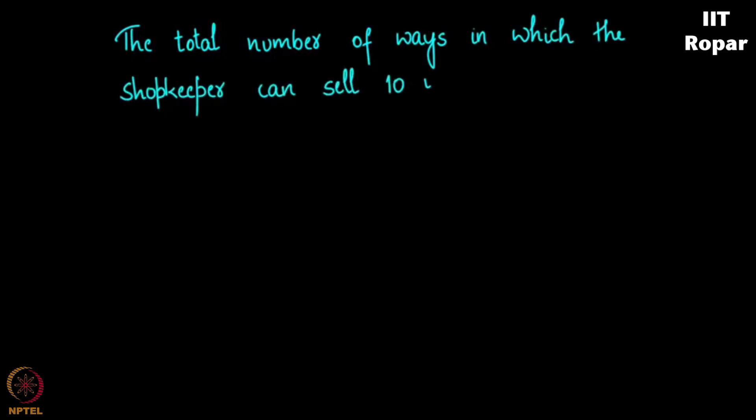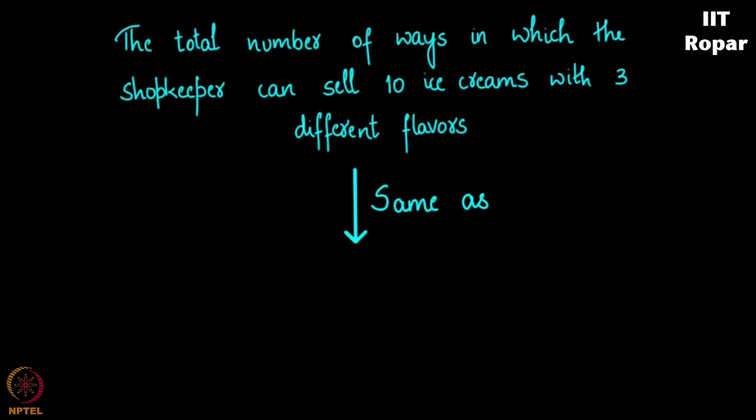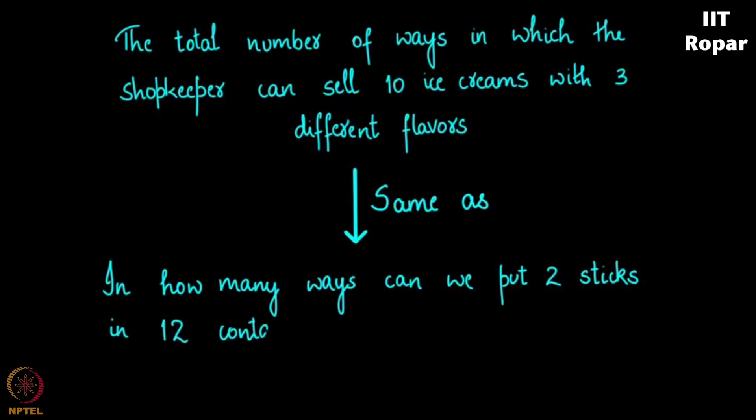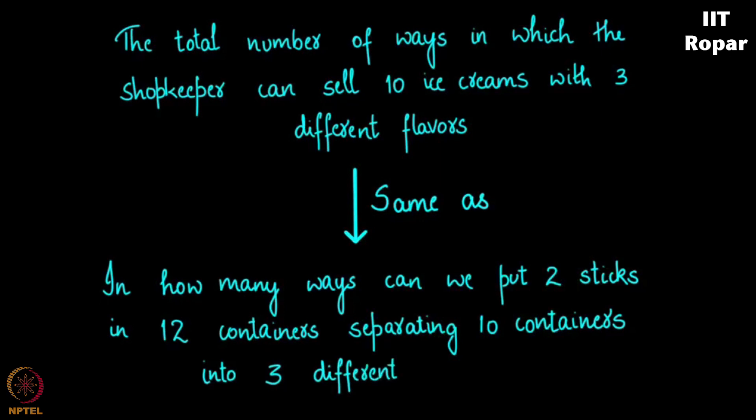And so the total number of ways in which the shopkeeper can sell ten ice creams of three different flavors is simply the same question. It can be converted to the question of: in how many ways can you put two sticks in twelve containers, separating ten containers into three different categories? Correct? You may have to observe this deeply to understand what I am saying.